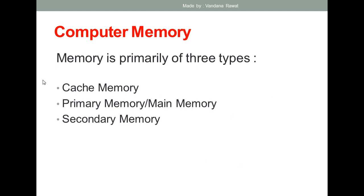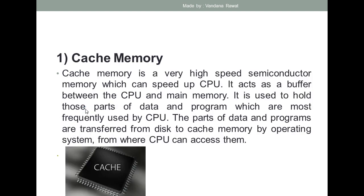Memory is primarily of three types: the first is cache memory, the second is primary memory — without which the computer cannot work — and the third is secondary memory, which is additionally attached to the computer for saving more records. We will discuss each one by one.